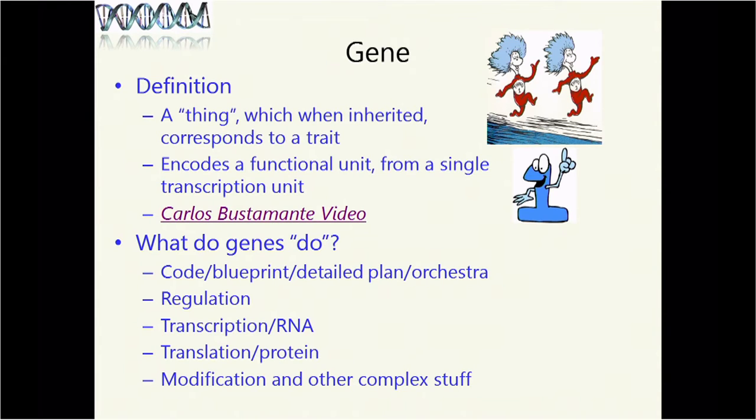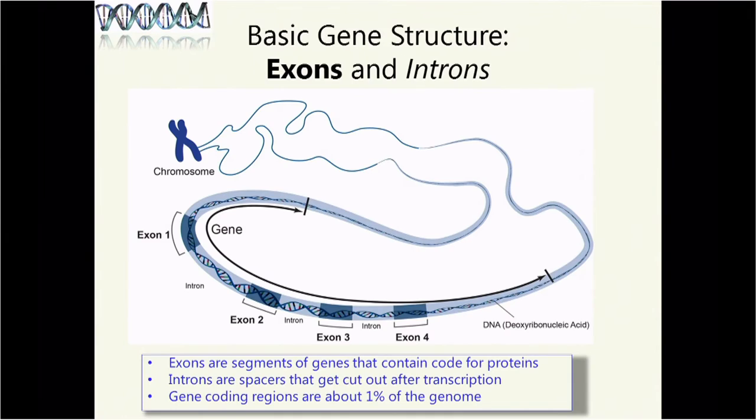What do genes do? They code for things, a blueprint or detailed plan for how to run and build an organism. It's kind of like an orchestra. They regulate each other. One gene may produce a product which regulates other genes, turns them on and off, makes differentiation happen, makes organ-specific genes be expressed. Genes make, through transcription, RNA. Through translation, eventually through RNA, they make protein. And genes can also make proteins that are modified and have other complex stuff happen to them, even after translation.